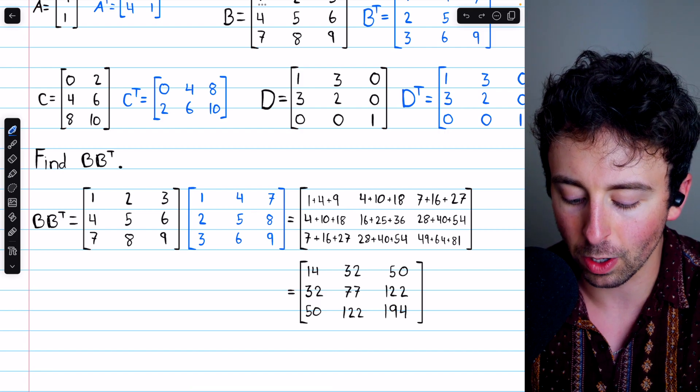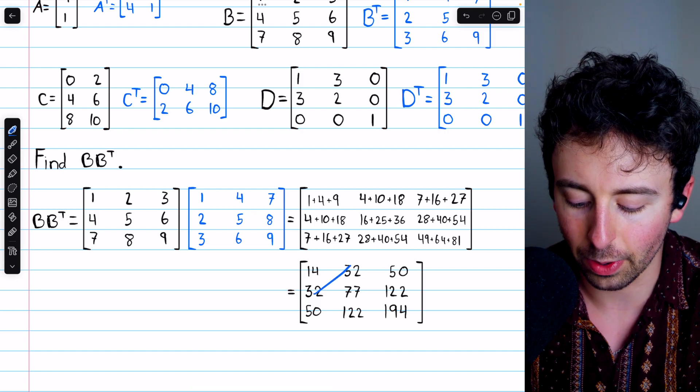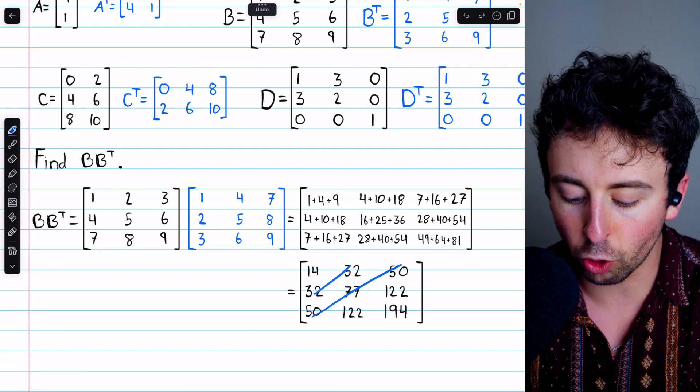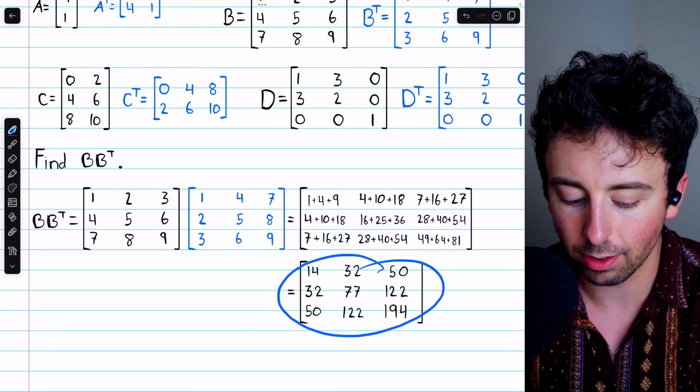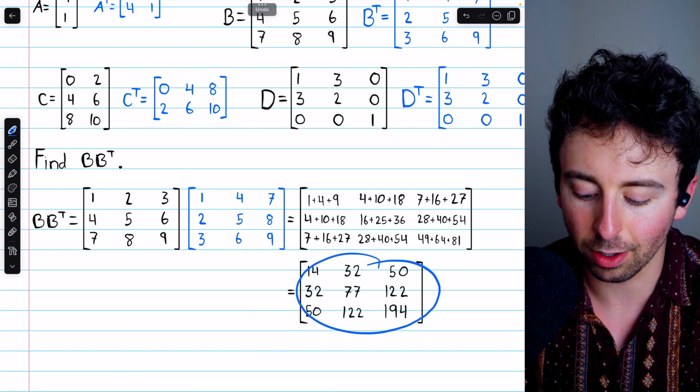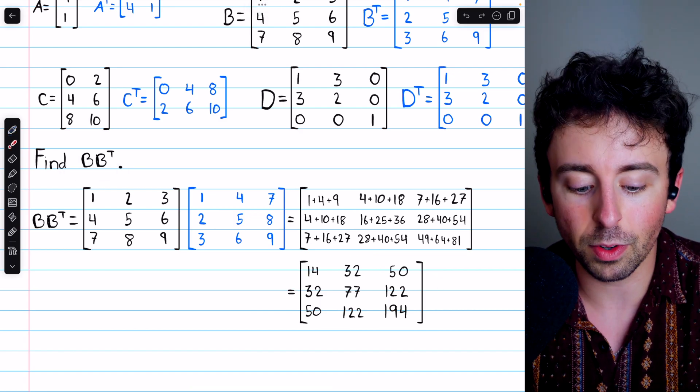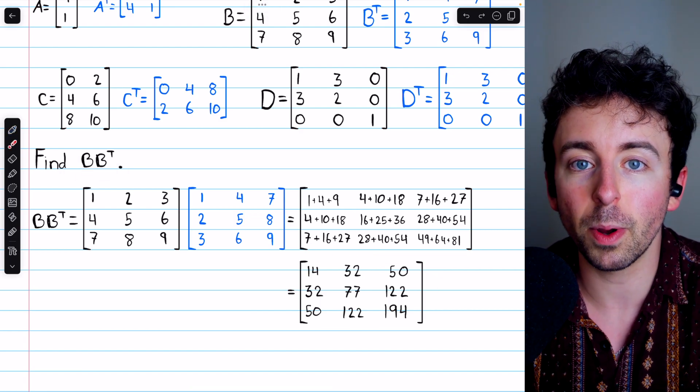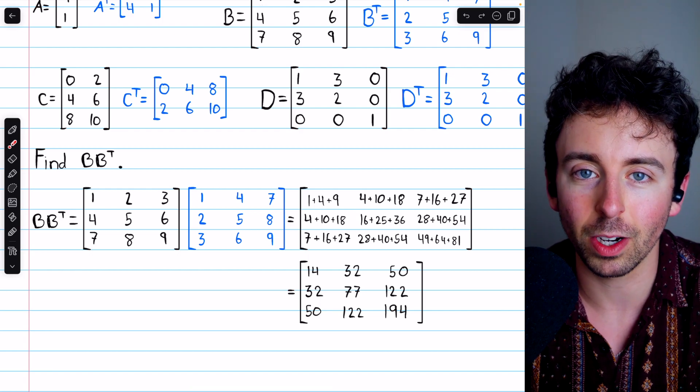And look at this. This is a symmetric matrix. You can see how it's symmetric across its main diagonal. The transpose of this matrix, which is BB transpose, the transpose of this matrix would be itself. So if you take a matrix and multiply it by its transpose, you get a symmetric matrix. Pretty interesting.